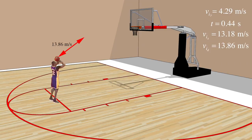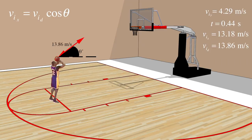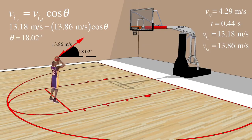Finally, using all the data we have calculated, we can find the angle at which Dwight must throw the ball. We can use the formula: velocity initial in the x direction equals velocity initial in the diagonal direction times the cosine of theta. Plugging in our known values to find theta, after solving, we find that the value of theta is equal to 18.02 degrees.